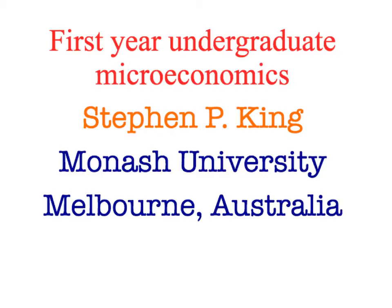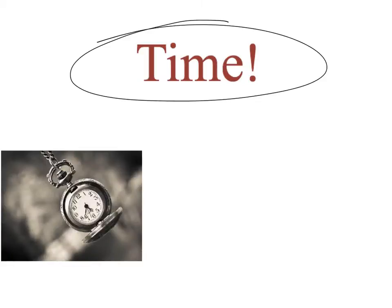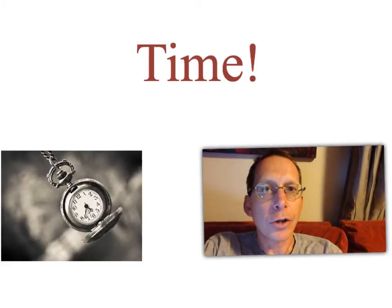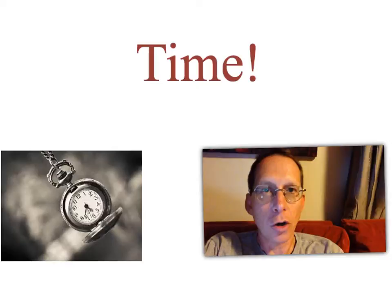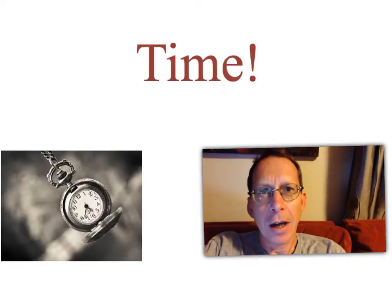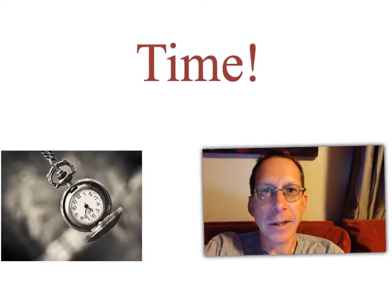Welcome back to first year undergraduate microeconomics. Our topic today is time. Economists often use the terms short-run and long-run. John Maynard Keynes famously said, 'in the long run we're all dead.' But what do the terms short-run and long-run actually mean? Are they a specific length of time, or are they something else?